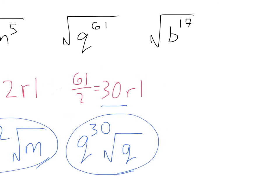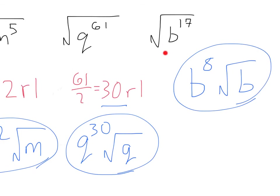Looking at b to the seventeenth: two goes into sixteen eight times, so that's going to be b to the eighth. And there's going to be one left over, so that'll be square root of b. As you do practice with these, you'll be able to do these quicker and quicker. I knew that two went into sixteen eight times, and then one left over gives me seventeen, so I have square root of b.